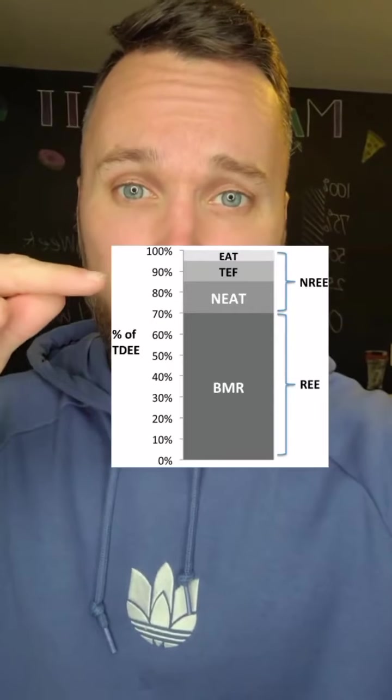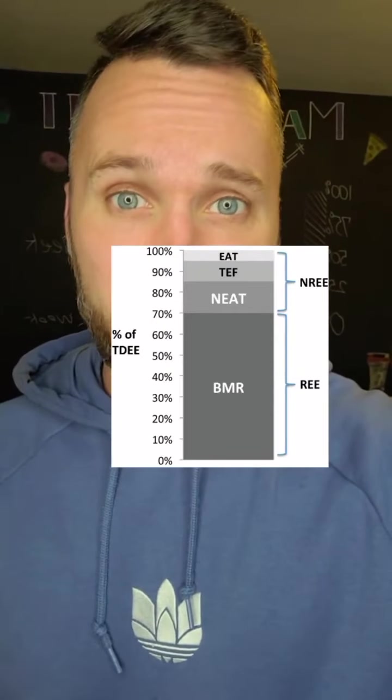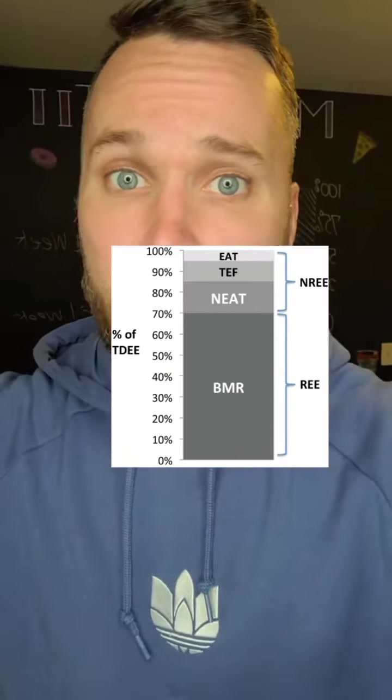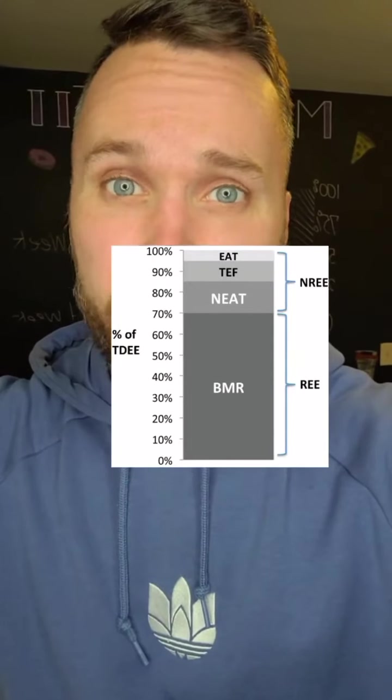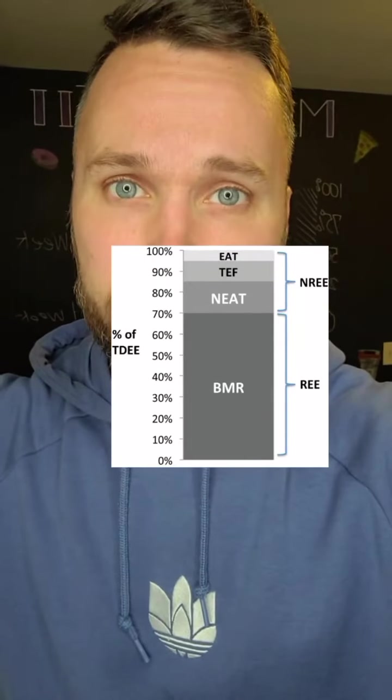Next up, we have the thermic effect of food. This is the calories burned from digesting your food every day. Protein has the highest thermic effect of food, so you're going to burn more calories the more protein you eat.